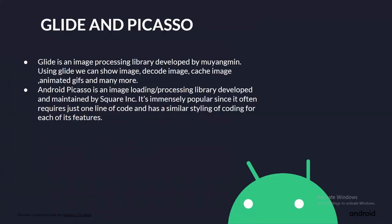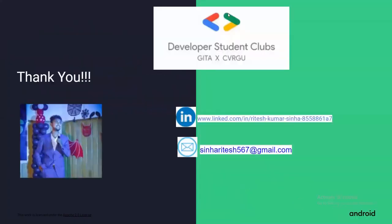Next is Glide. Glide is an image processing library. Using Glide, we can show images, decode images, cache images, handle animated GIFs, and many more things. Coming to Picasso — Android Picasso is an image loading and processing library developed and maintained by Square Incorporation. It is immensely popular since it often requires just one line of code and has a similar styling of coding for each of its features. That is all from my part. I now request Aman to carry on.